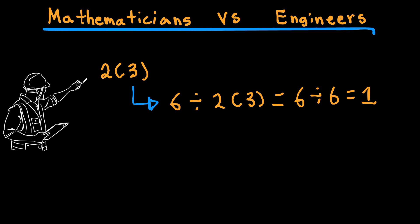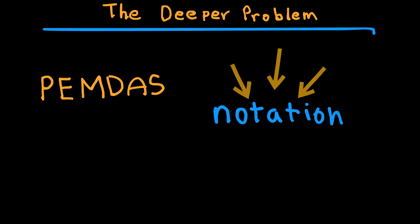Even teachers have been divided over this. You'll see this problem on social media with millions of comments, people swearing they're right. The real issue here is not PEMDAS, it's notation. The way we write math expressions matters. If there's ambiguity, then the expression itself is flawed, not the person solving it.